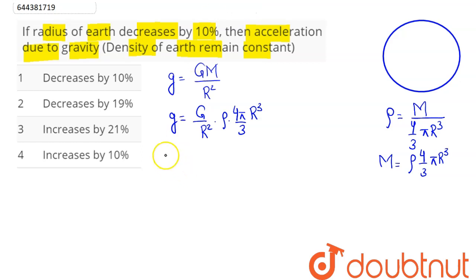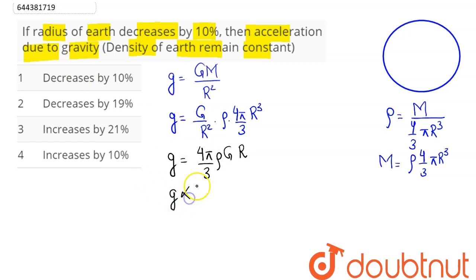Hence the value of g comes out to be (4π/3) ρ G r. We can see that g is proportional to r, since density ρ and G are both constant. So as the radius of the Earth decreases by 10 percent, g changes proportionally.